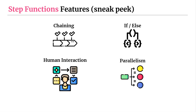And then finally there's parallelism — doing a bunch of things at once, performing multiple different tasks, and then joining the results to one output. This is another really powerful feature in terms of concurrency, and you'll see this a lot in different Step Function workflows.